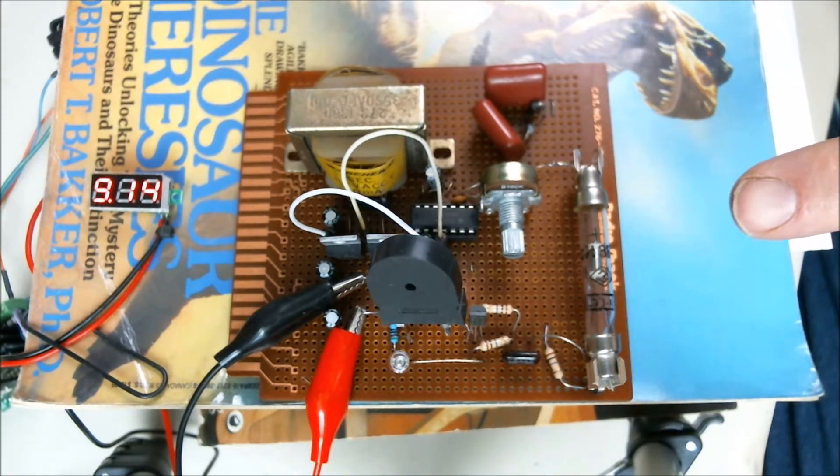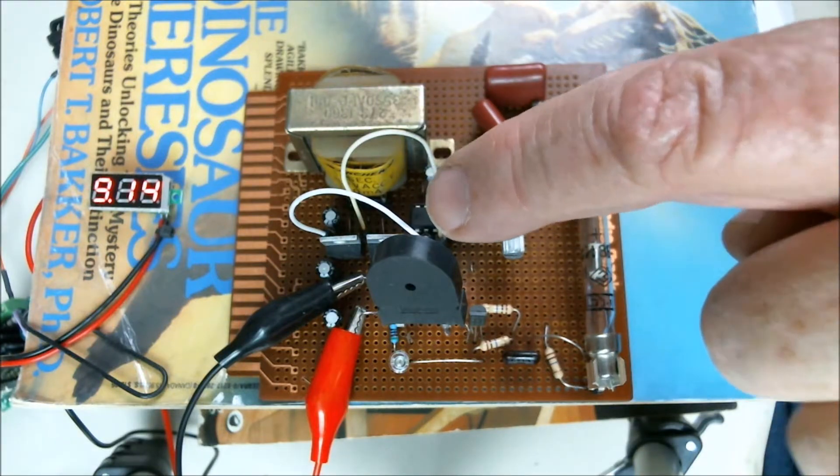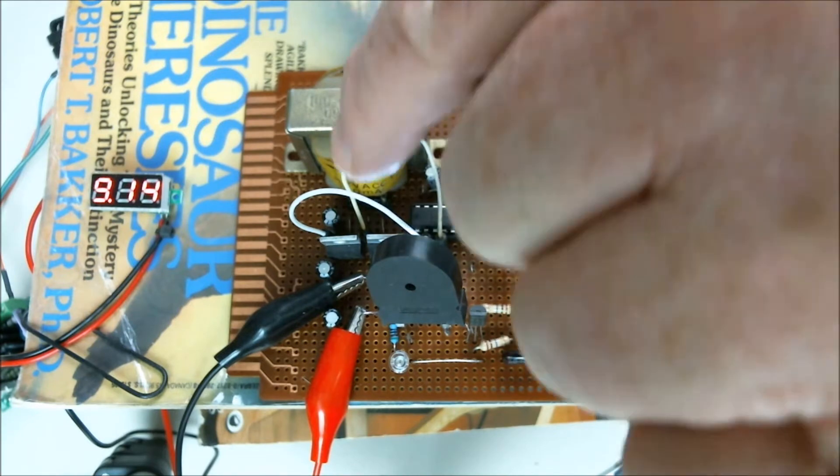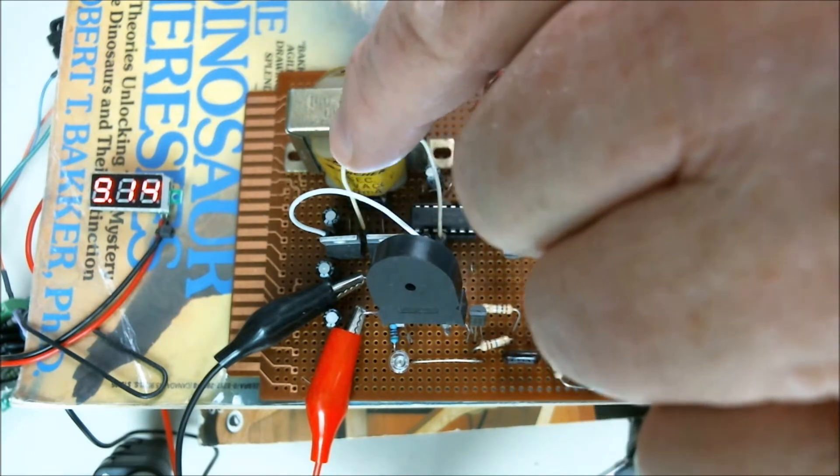This is a surplus Russian Geiger tube, piezo buzzer. We'll discuss the high voltage supply in another circuit in another video.